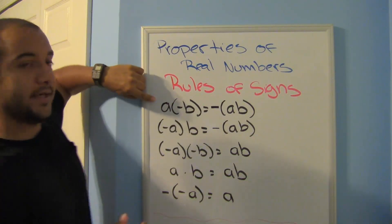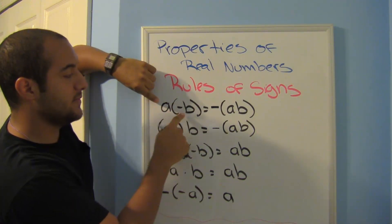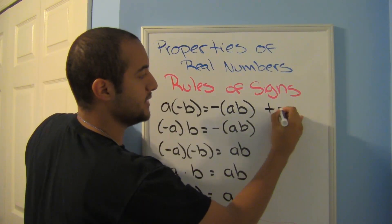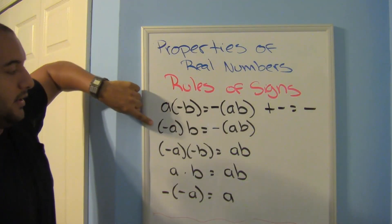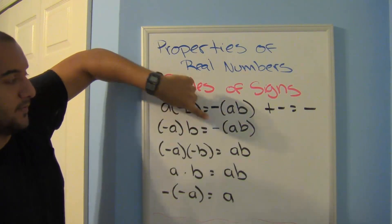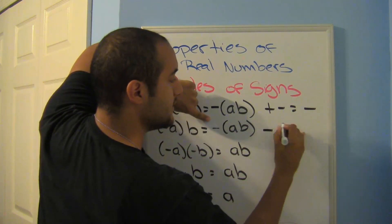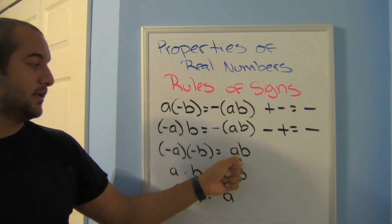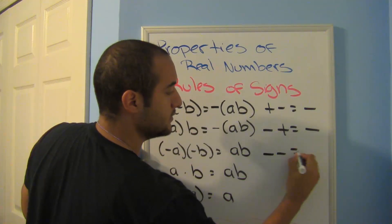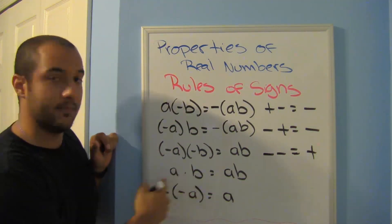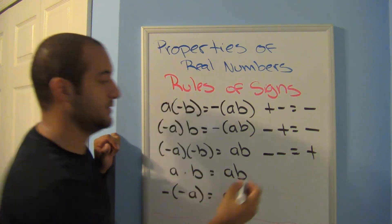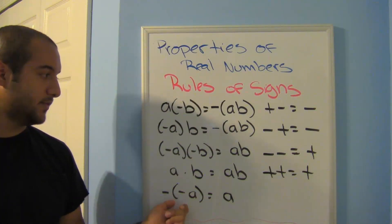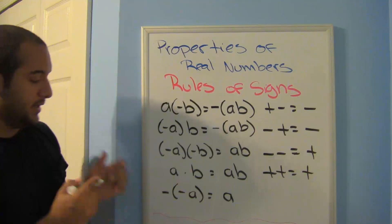Here are the rules for signs. A positive times a negative equals a negative. A negative times a positive is also negative. A negative times a negative is positive. And both positives: positive times positive is positive.